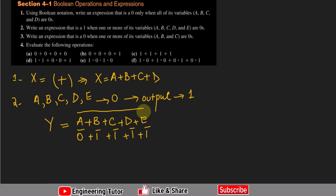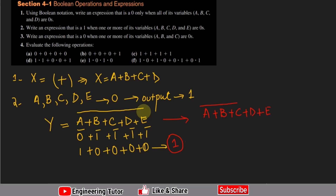The OR of the complements gives 1 + 0 + 0 + 0 + 0 = 1. So the answer to question 2 is: Y = (a + b + c + d + e)', the complement of the entire OR expression.